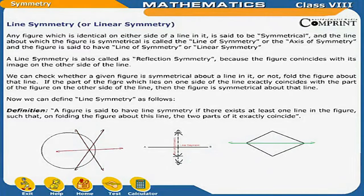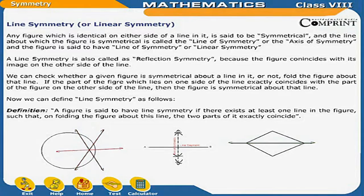Symmetry. Line symmetry or linear symmetry. Any figure which is identical on either side of a line is said to be symmetrical. The line about which the figure is symmetrical is called the line of symmetry or the axis of symmetry, and the figure is said to have line symmetry or linear symmetry. A line symmetry is also called a reflection symmetry because the figure coincides with its image on the other side of the line.